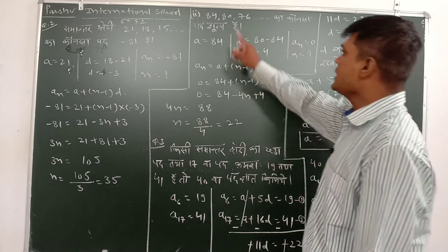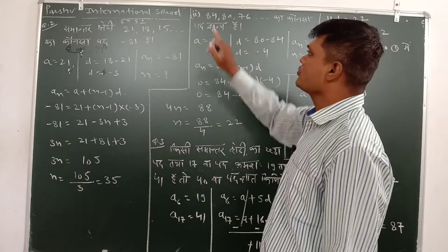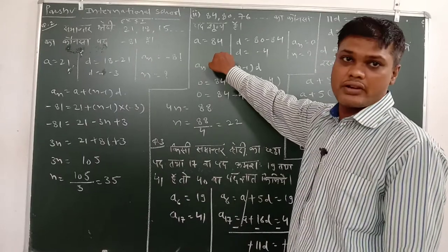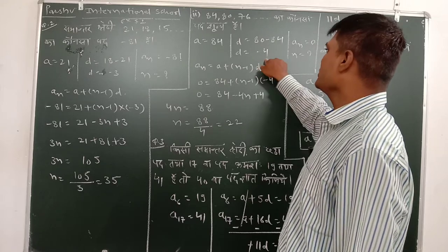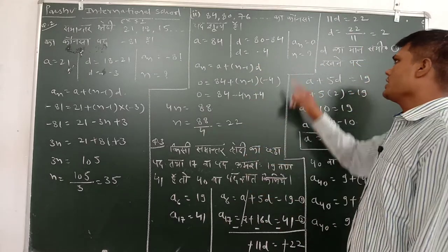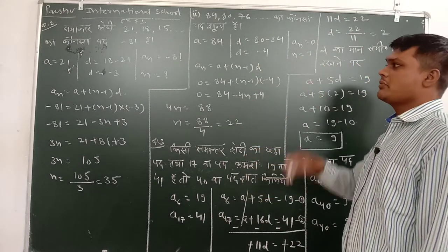Next question aata hai: 84, 80, 86 ho tar ka kaun sa pad shunya hai? A kaman kitna diya ho ye? 84. D kaman kitna hoga ye? Minus ka 4. And n kaman shunya hoga ye, and n kaman humye gyat karna hai.